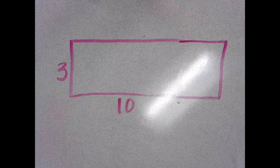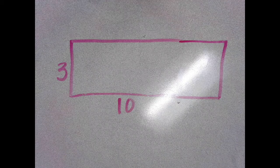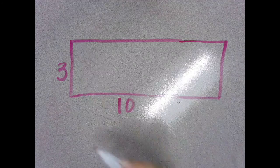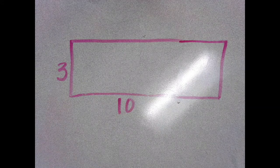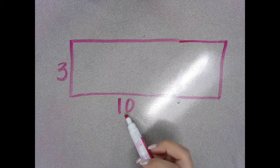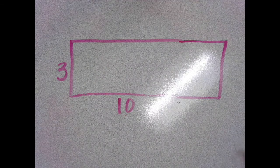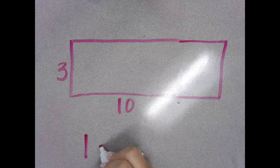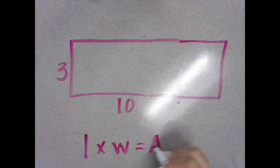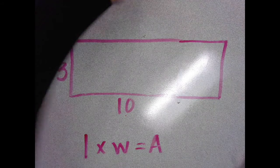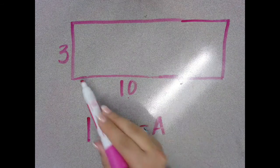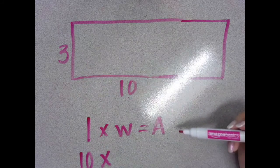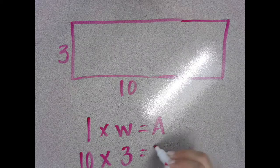Here's another rectangle that we can practice with for area. We have the dimensions of 10 by 3. Remember, area is always talking about a flat shape, or a 2-dimensional shape. So we have our 2 dimensions of 10 and 3. Our formula is length times width. The length — think 'long' — is 10, and width is how wide it is, which is 3. So 10 times 3 equals 30.